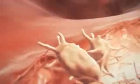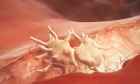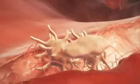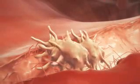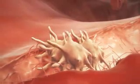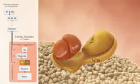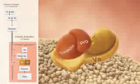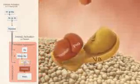Thrombin enhances the activation and aggregation of platelets. On their surfaces, the coagulation factors, also activated by thrombin, accumulate. In tandem with factor 5A, factor 10A induces the so-called thrombin burst.